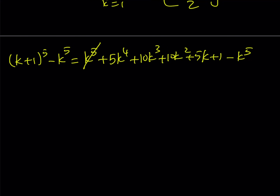We can cancel out the k to the fifth power, which gives us a nicer expression. The reason I use fifth powers is that I want to get the sum of the fourth powers, and the only way to end up getting a fourth power term is by using the difference of fifth powers like this.